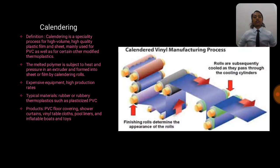Next is the calendaring process. The calendaring process can be defined as a specialty process for high volume or high quality plastic film and sheets, mainly used for PVC as well as for certain other modified thermoplastics. The melted polymer is subject to heat and pressure in an extruder and formed into sheet or film by calendaring roll. However, it is expensive equipment but has high production rates.